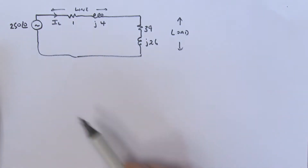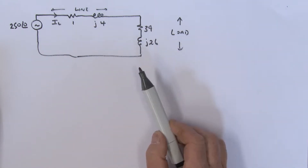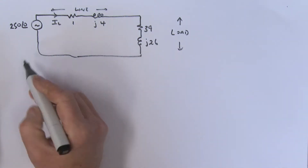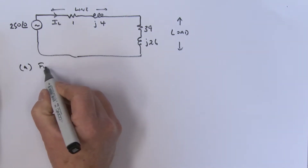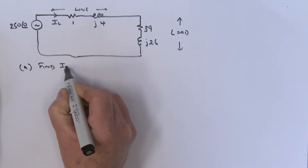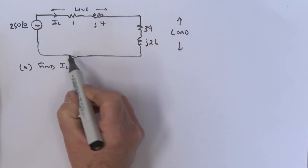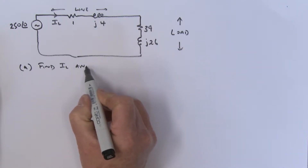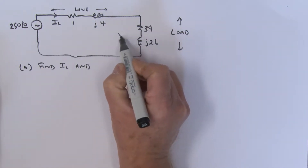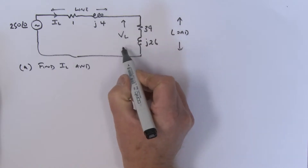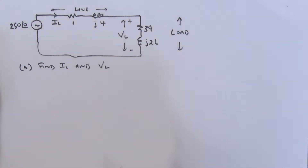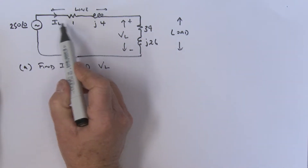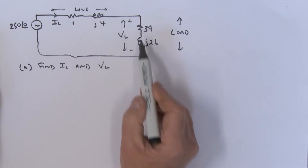All right, I hope you've had a chance to have a look at the problem I set you. In the first part, what we were trying to do was find the current IL — that's the current in the circuit — and the voltage VL, that's the voltage across the load. So let's do it together.